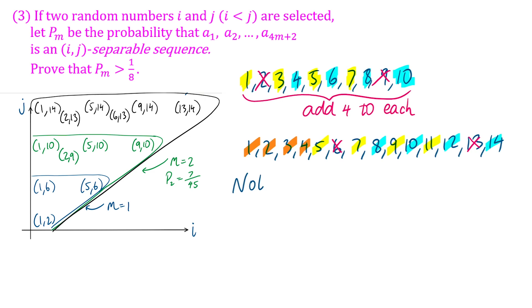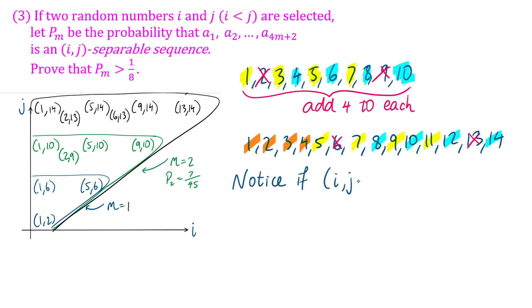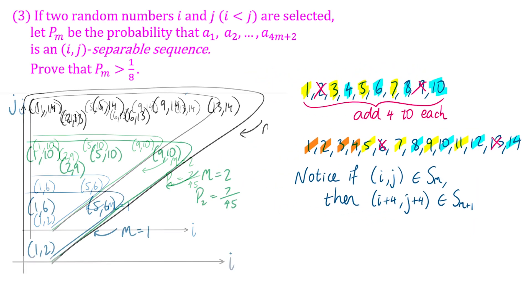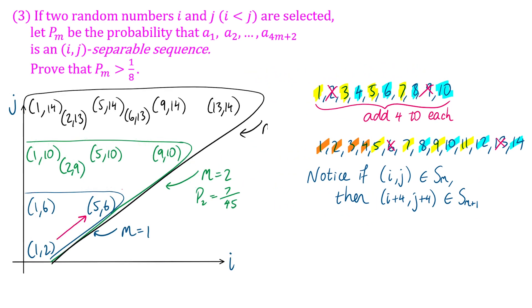We can generalize this to say that if (i,j) is part of the solution set Sₘ, then (i + 4, j + 4) will be part of the solution set Sₘ₊₁, because we can add four to all the subsequences for the (i,j) solution. And then we'll be left over with the first four consecutive integers, which is obviously another arithmetic subsequence. So with that recurrence relation, we can then build up from the initial solutions we have, generalize and get more solutions every time, like going this way.